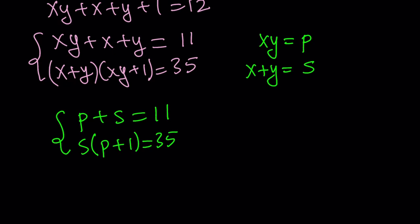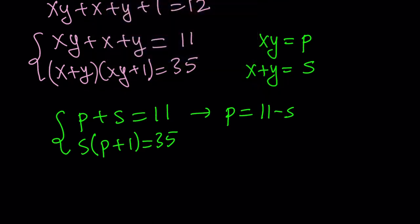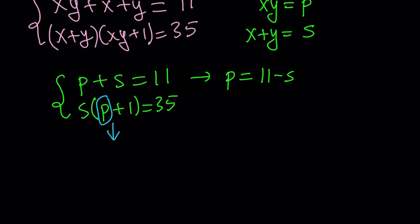I'm going to use substitution here because from the first equation, it's easy to isolate p. I can go ahead and write p as 11 minus s. And then I can just go ahead and substitute that here. I can replace in the second equation, not the first and second that I named, but in the second equation of this system, I can basically replace p with 11 minus s.